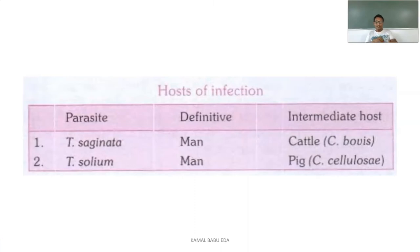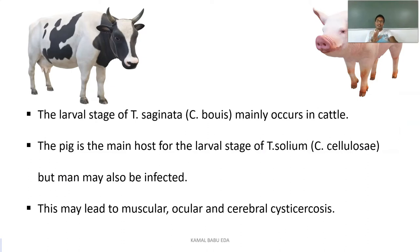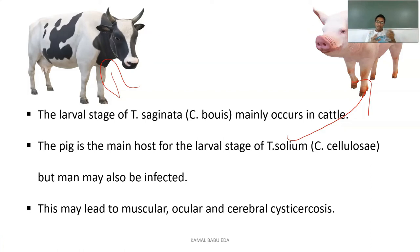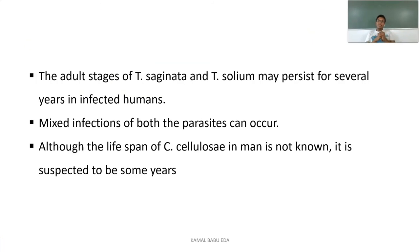The larval stage of Taenia saginata occurs mainly in cattle, while the larval stage of Taenia solium — Cysticercus cellulosae — occurs in pigs. If man is accidentally infected with the larval stage of Taenia solium, it will lead to muscular, ocular, and cerebral cysticercosis. The adult stages of both Taenia saginata and Taenia solium may persist for several years in an infected human, and mixed infections of both parasites can occur simultaneously.